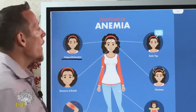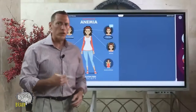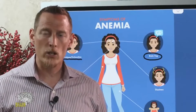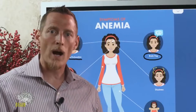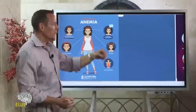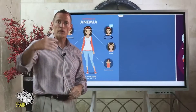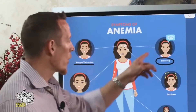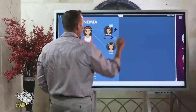Brain fog is another common symptom. This might look like walking into your closet or pantry and not remembering why you went there, or thinking of a word or a name but being unable to bring it to your lips — that word recall issue. Brain fog is a very common symptom of anemia.